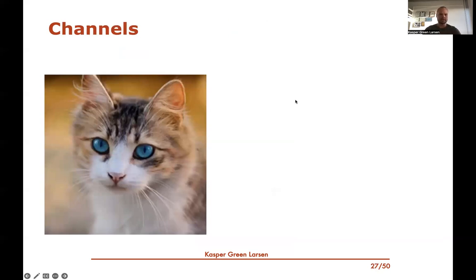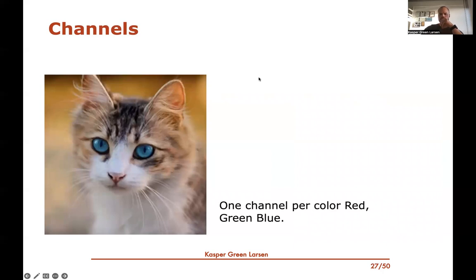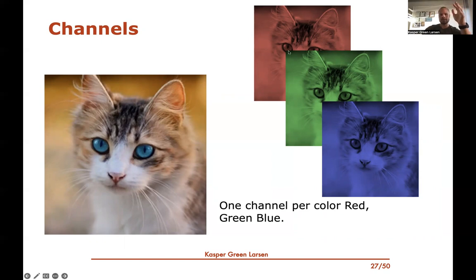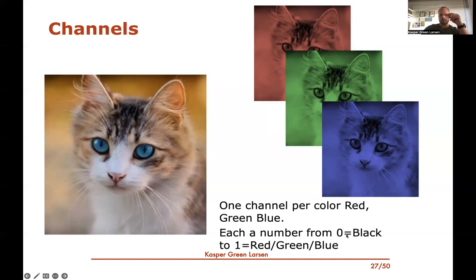For color images, we use channels. We have one channel for red, green, and blue — so we take the input image and turn it into three different images representing the amount of red, green, and blue at each pixel position. Any color pixel can be expressed as a combination of red, green, and blue, each being a number from zero (black) to one (fully red, green, or blue).